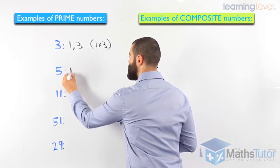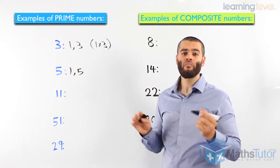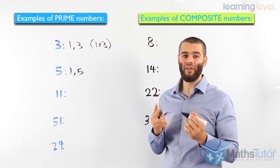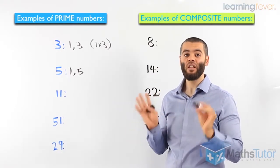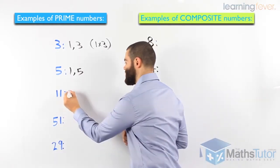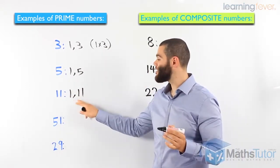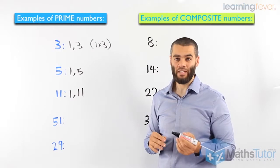5, again, 1 and 5. 1 times 5 is 5. So only 2 factors. Prime numbers only have 2 factors. 11. 1 times 11. Again, it's a prime number. It only has 2 factors.